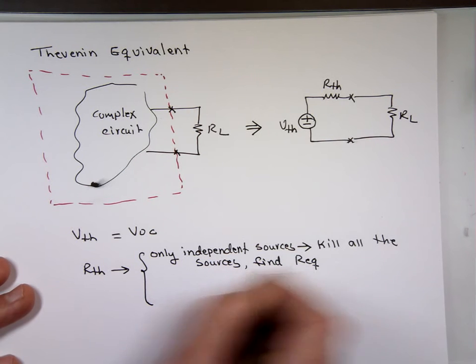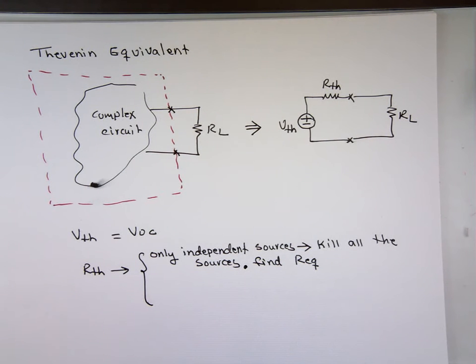When I say kill all the sources, what does that mean? The voltage source becomes short circuit. The current source becomes what? Open circuit.